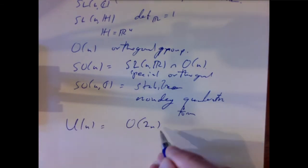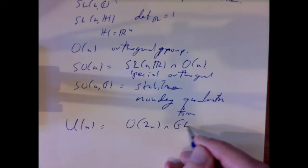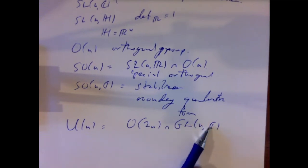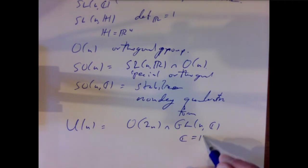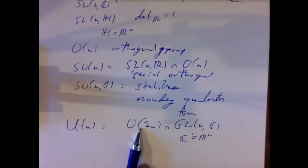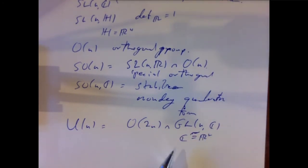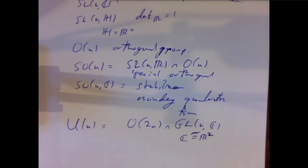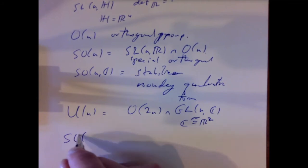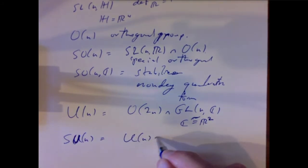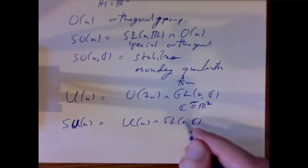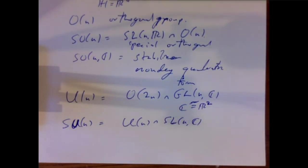The unitary group U(n) consists of orthogonal 2n-by-2n matrices that are complex n-by-n matrices — when you treat complex numbers as pairs of real numbers, every n by n complex matrix becomes a 2n by 2n real matrix, and we ask that they be orthogonal real transformations. The special unitary group SU(n) consists of unitary matrices with determinant 1. These are all nice examples — basically things we've already seen from linear algebra.